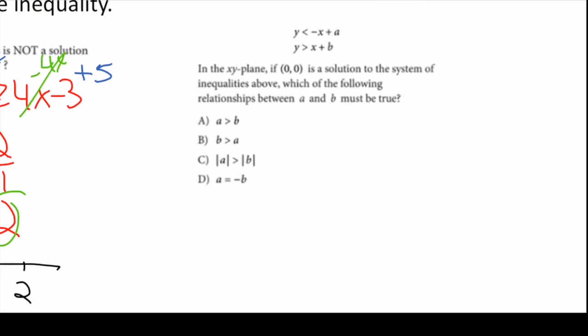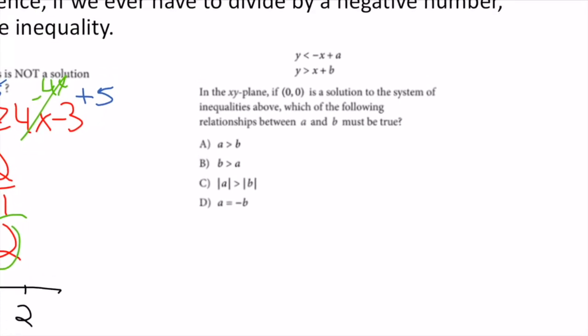In the xy plane — the normal graph we're used to seeing — if (0, 0) is a solution to the system of inequalities above, which of the following relationships between a and b must be true? They always give us enough information. Here they give me a point and say it's a solution, so it works for both equations.